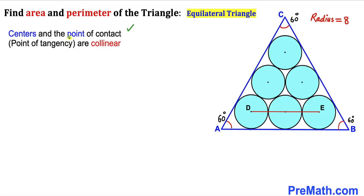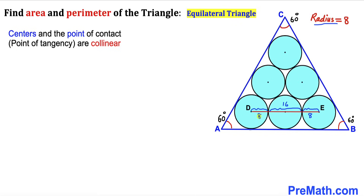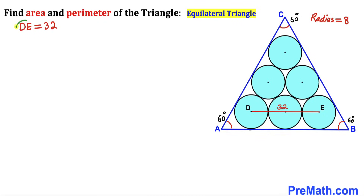Let's recall another crucial fact: the centers and the point of tangency are collinear — in other words, the centers and points of tangency lie on the very same line. We know the radius is 8, so this radius is 8, this full diameter is 16, and likewise the other radius is 8. Adding all these gives us 32, so DE = 32.